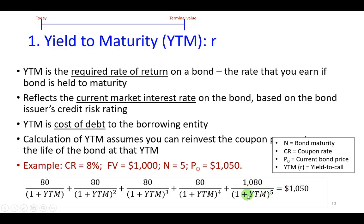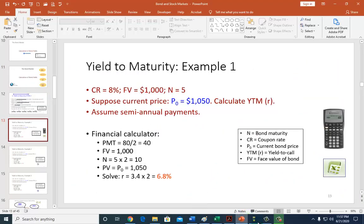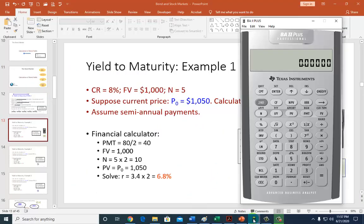We can do it manually via trial and error, but we can also use our BA2+, which is what I'm getting ready to show you right now. The first thing you want to do is Second, Clear TVM, and Second, Clear Work.